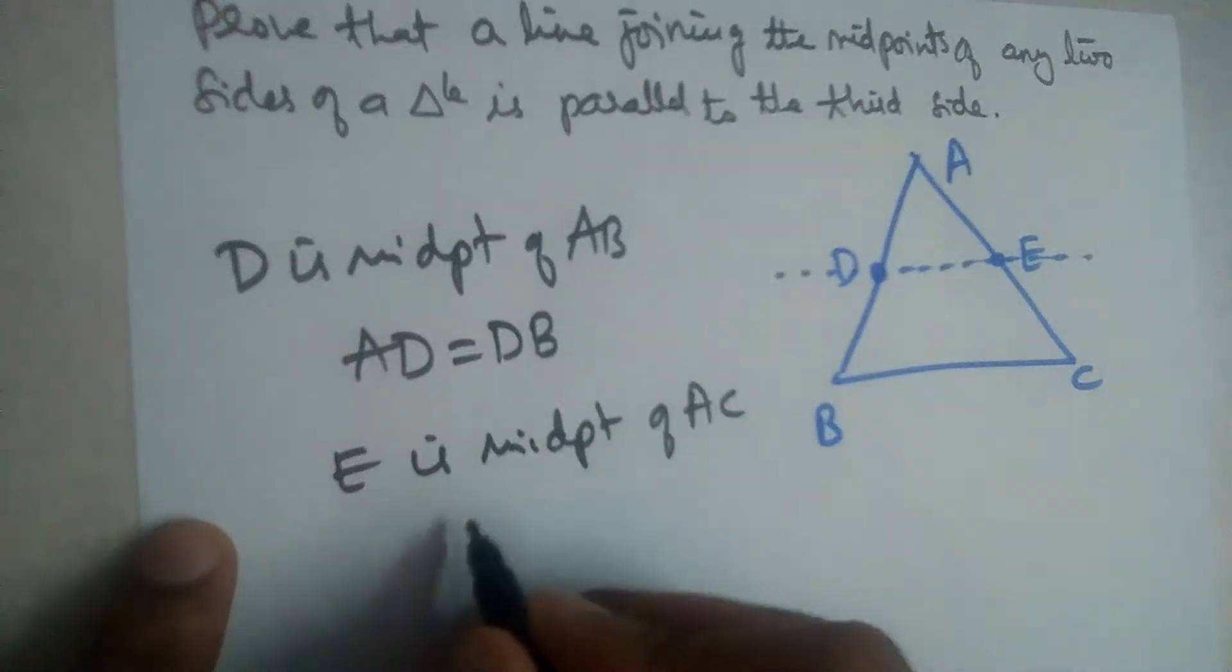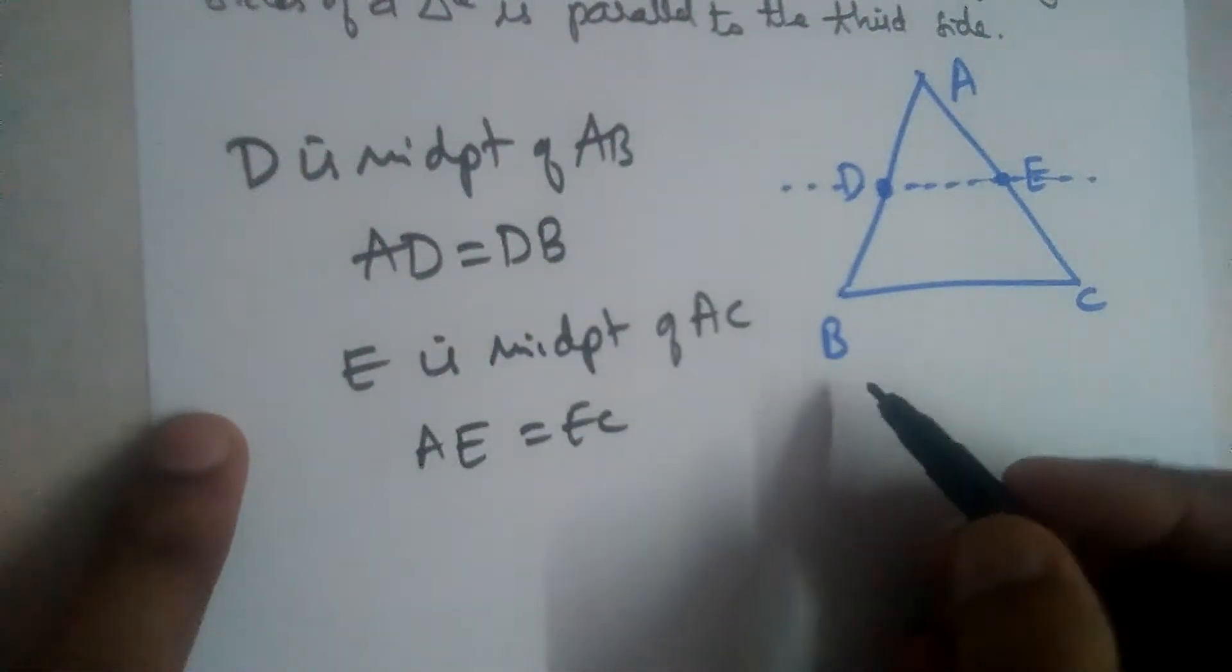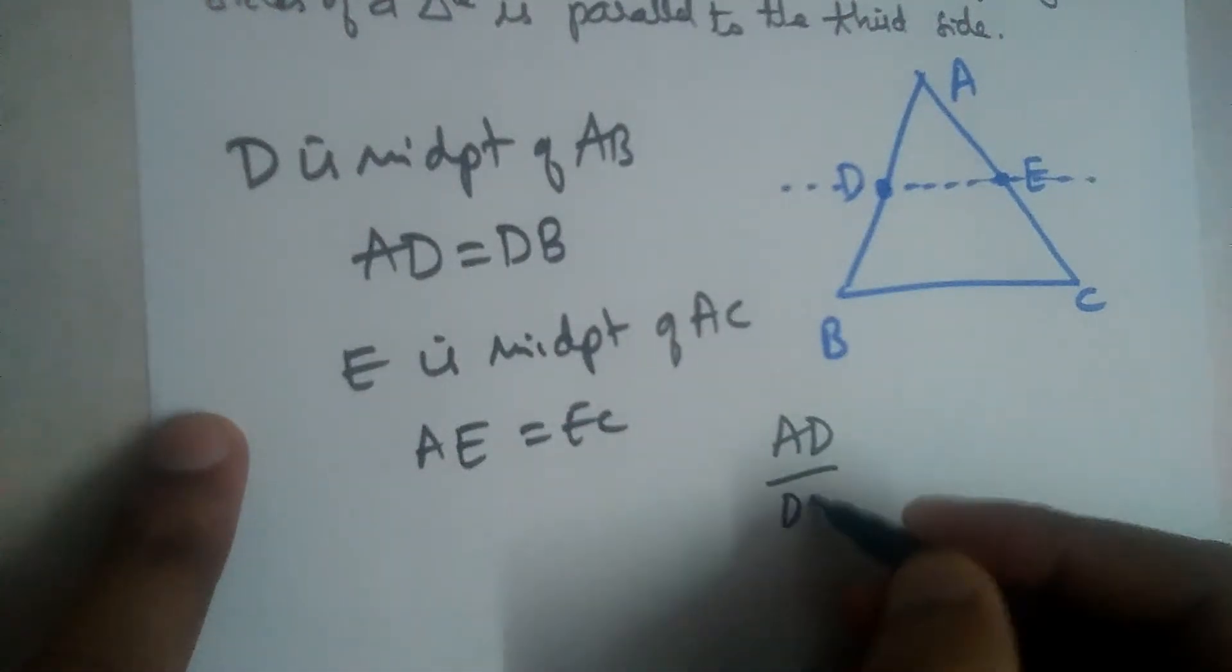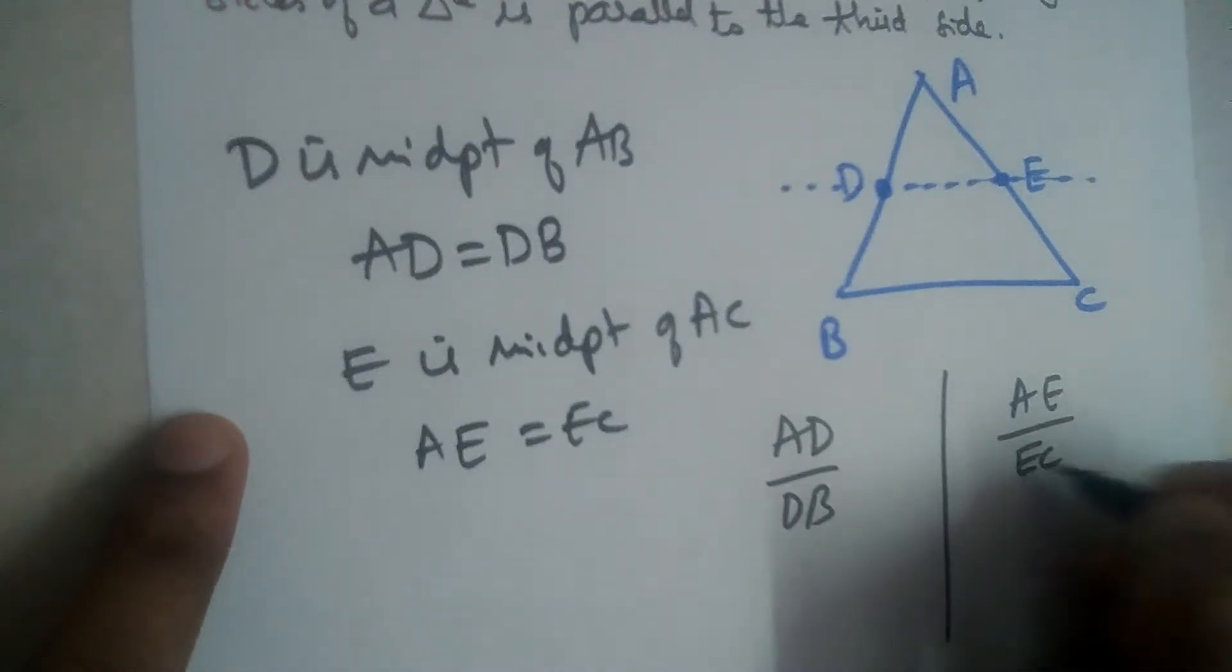That means AE will be equal to EC, right? All right. Now let us divide the ratios. Let us divide AD by DB and let us divide AE by EC.